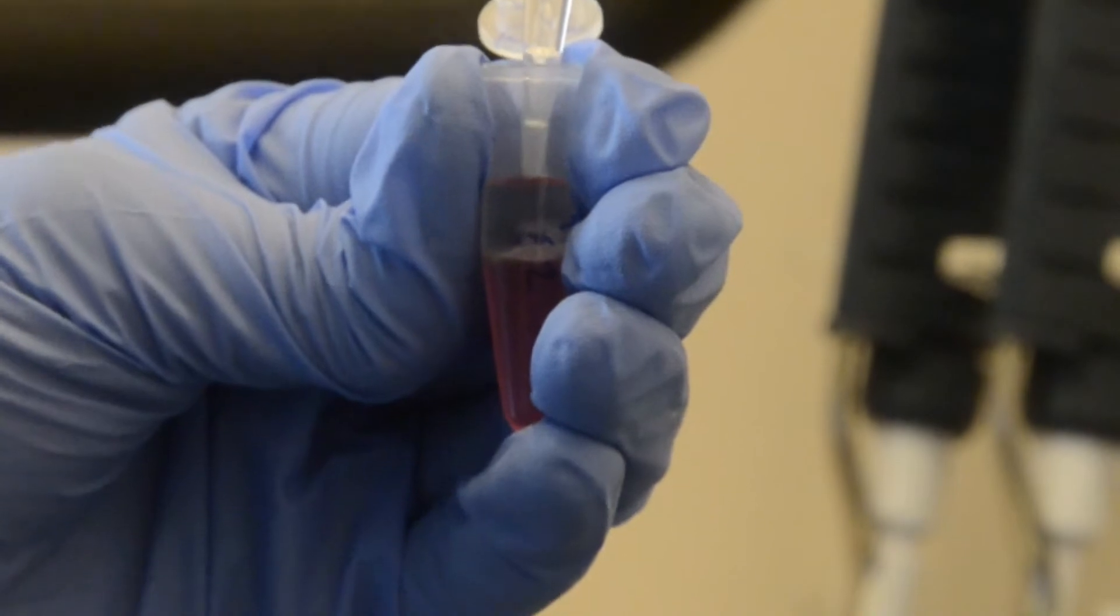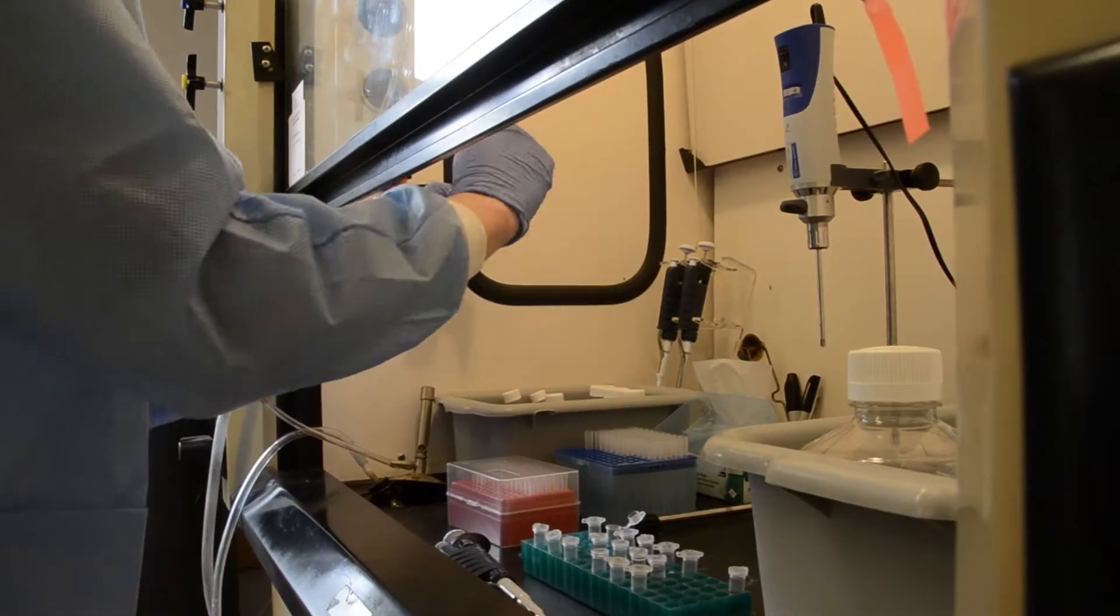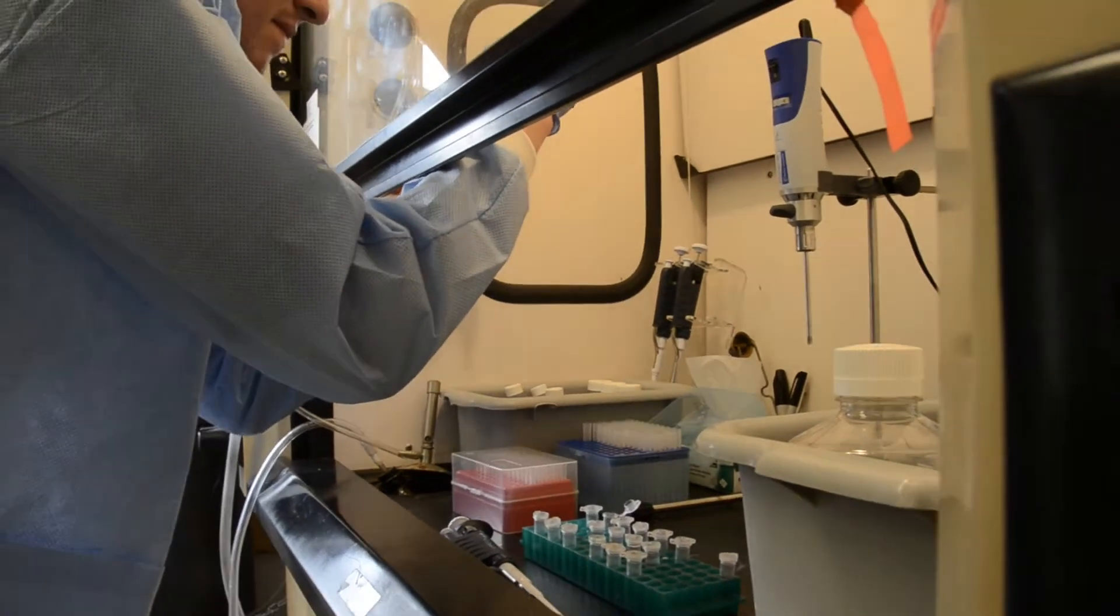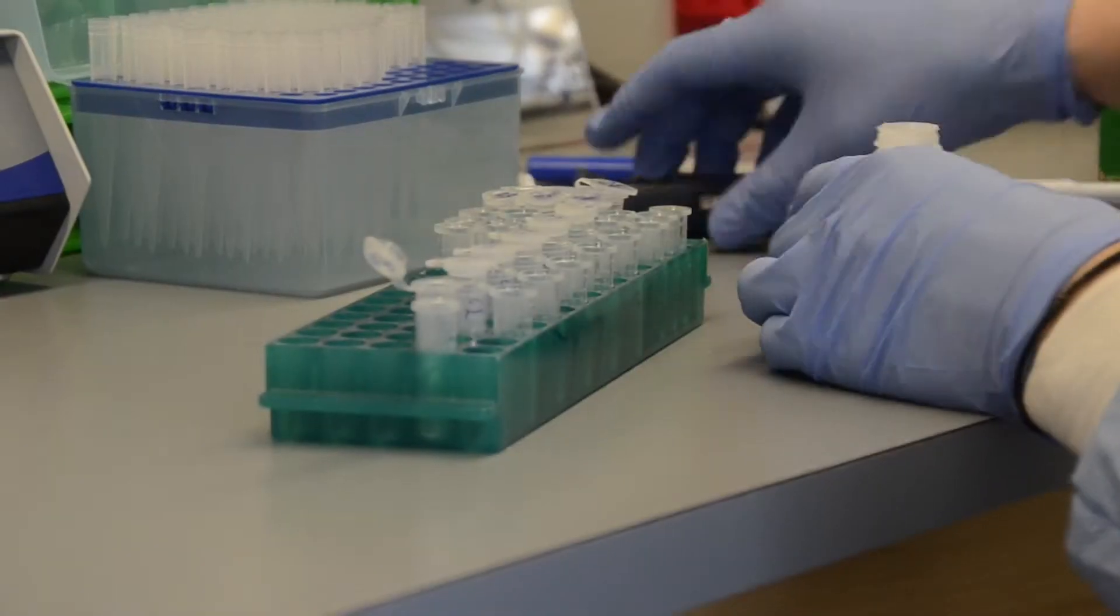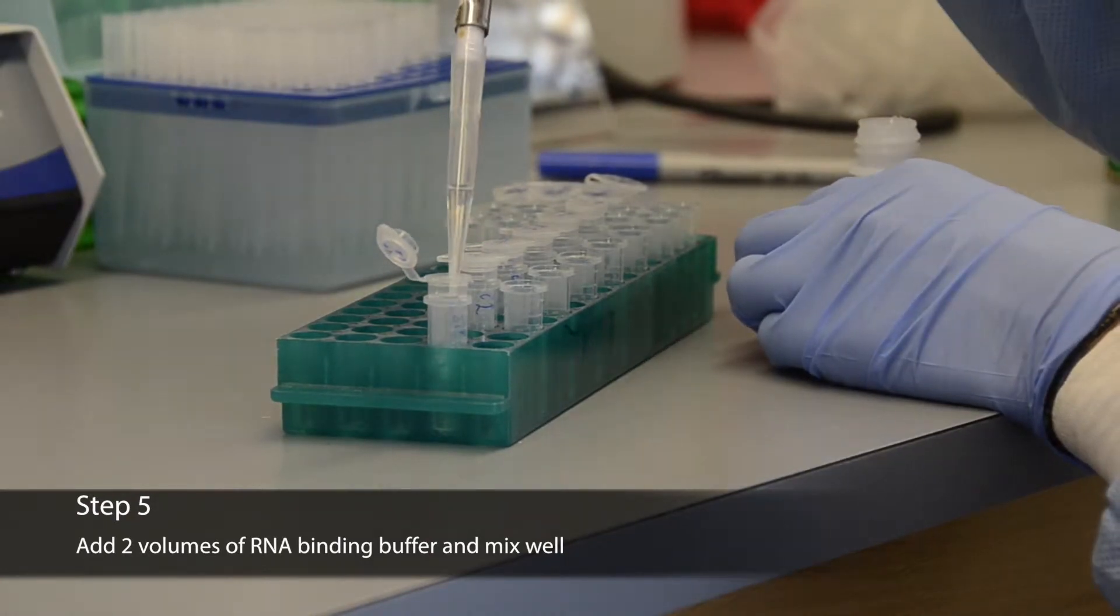If you puncture the phenol layer, re-centrifuge samples as previously described. Add two volumes of RNA binding buffer and mix well. Avoid vortexing.